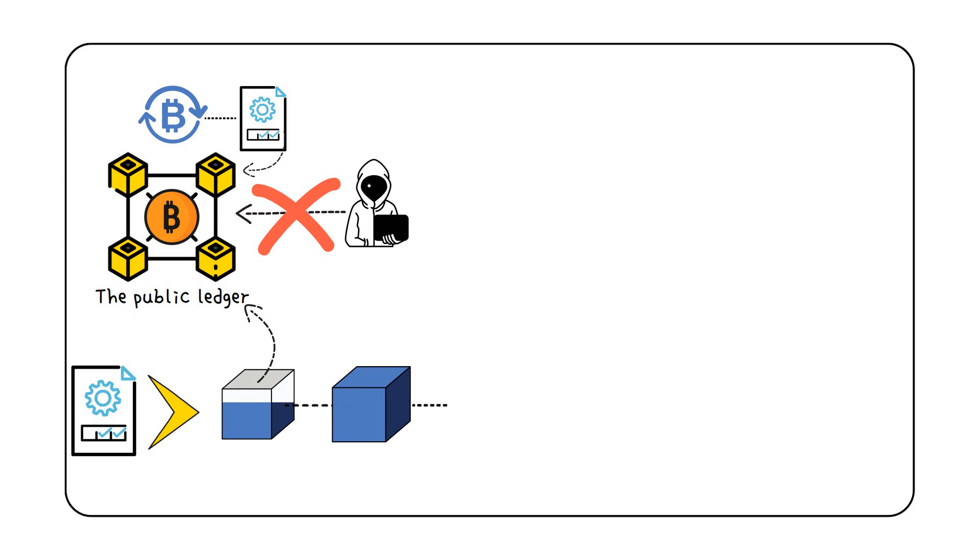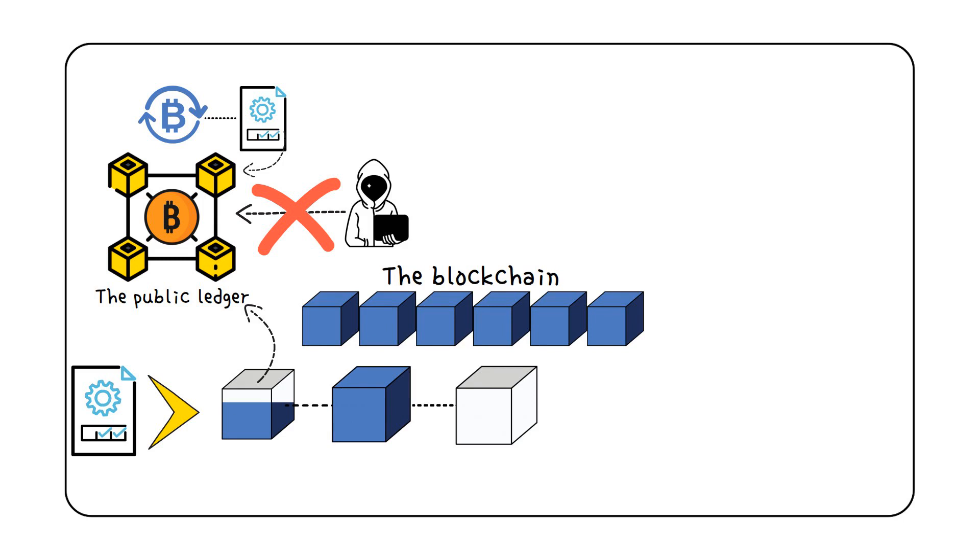In order for this transaction to be inscribed into the blockchain, it has to be written into a block that would then be added to the network. When an old block is filled, a new block has to be created, thus continuously forming the chain of blocks, the blockchain. And this is where miners come in.